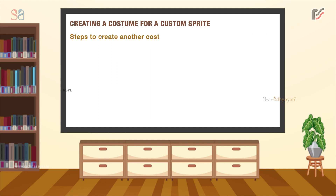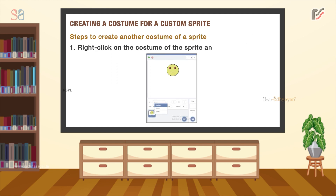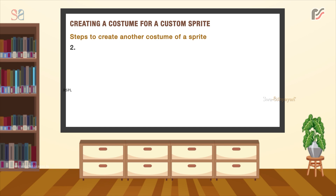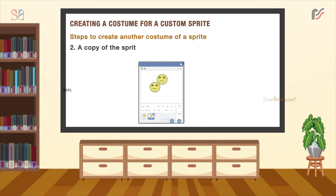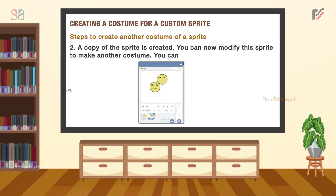Steps to create another costume of a sprite are: right-click on the costume of the sprite and select the Duplicate option. A copy of the sprite is created, so you can modify this sprite to make another costume. You can create as many costumes as you need.